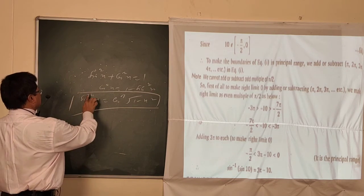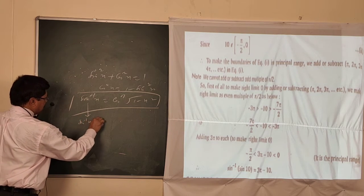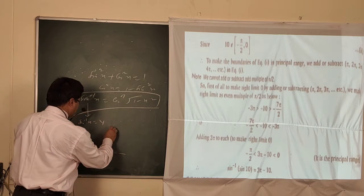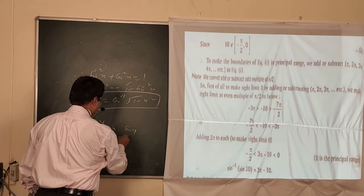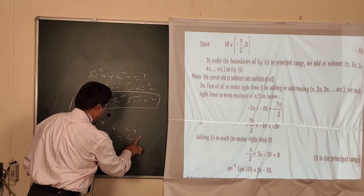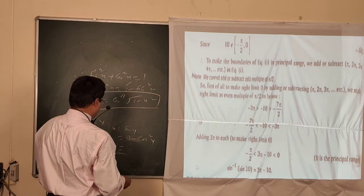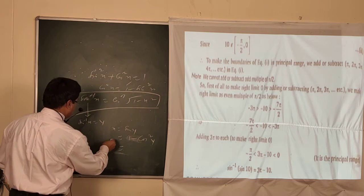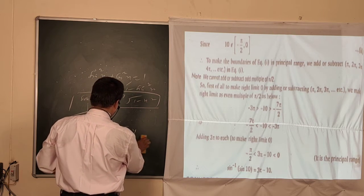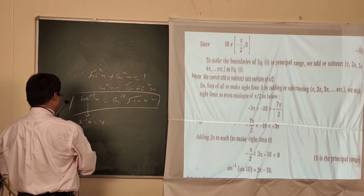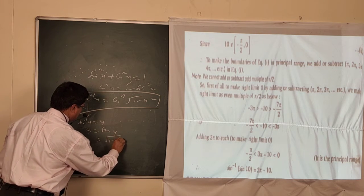Squaring both sides: x² = 1 - cos²y. So cos²y = 1 - x². Taking square root, cos y = √(1 - x²). Transferring cos and converting as an inverse function, we get y = cos⁻¹(√(1-x²)). Since y = sin⁻¹x, we have sin⁻¹x = cos⁻¹(√(1-x²)).